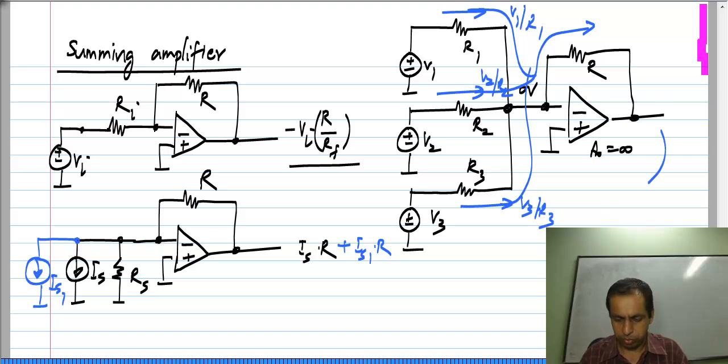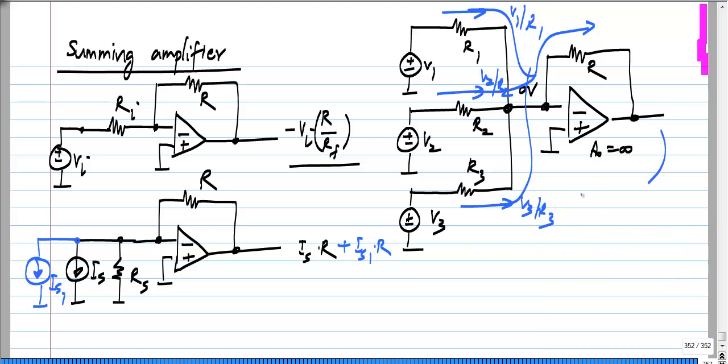So the output voltage would be minus V 1 times R by R 1 minus V 2 times R by R 2 minus V 3 times R by R 3.